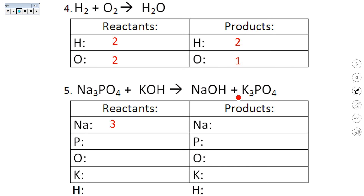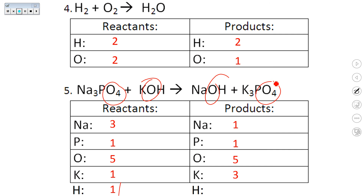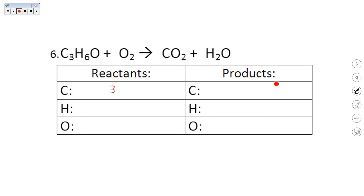For number five: reactants — three Na's, one P, five O's (four from one compound plus one from another), one K, and one hydrogen. Product side — one Na, one P, five O's, three K's, and one hydrogen. For number six: reactants — three C's, six H's, three O's. Product side — one C, two H's, three O's.